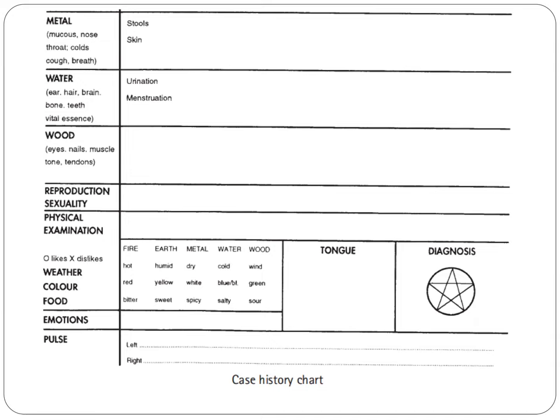For earth, we note humid, yellow, and sweet. For metal, dry, white, and spicy. For water, cold, blue, and salty. For wood, wind, green, and sour. So every element has its own description, and we can ask the patient if there is a presence of excess or deficiency. We also need to know about tongue description, emotions, and pulse on the left and right.